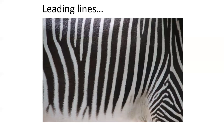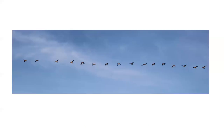Leading lines are formed by elements within your image and they lead the viewer's eye into and around. This is an unusual configuration as geese usually fly in a V formation. This allows the lead goose to cut through the air, reducing the air pressure for those geese that follow — similar to how race car drivers draft behind the lead cars to save on gas.